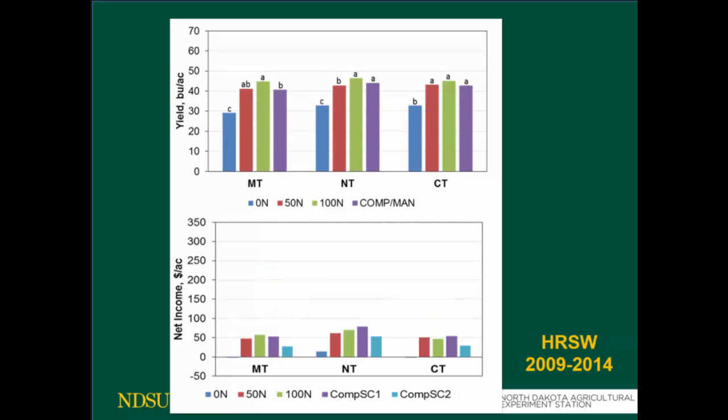When you go to spring wheat, it becomes a little different. There is some interaction between tillage systems and the rate and source of nitrogen. On average, there are three different situations. With no tillage and conventional tillage, there is no difference between 100 pounds of nitrogen applied as commercial fertilizer versus the compost treatment, but there is some difference under minimum tillage — we're still looking at what's going on there. When looking at the economics, the return is much lower than the other crops, and the difference between treatments is much lower as well.